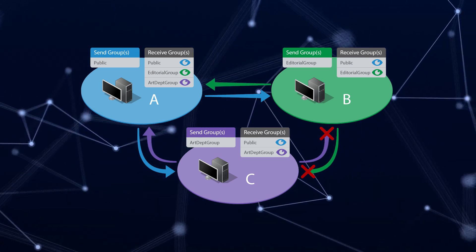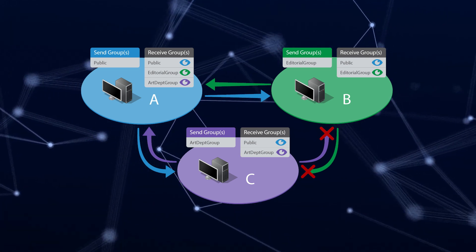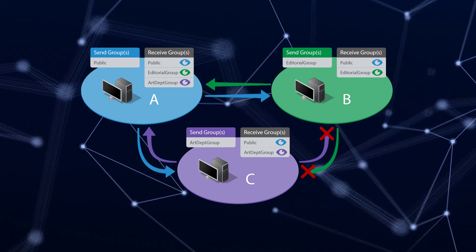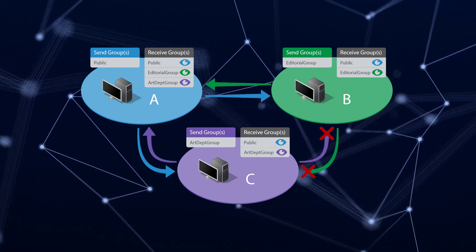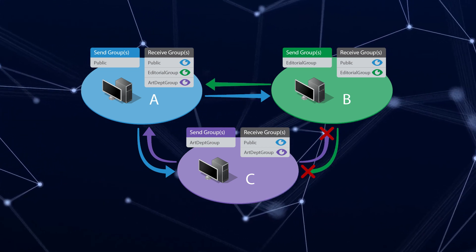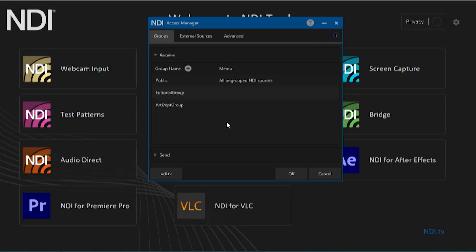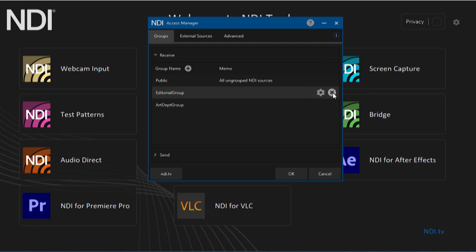This is a basic illustration of the NDI Access Manager features. It is recommended that you check with your IT department before setting this up to make sure everything works properly. If you need to quickly reset everything back, you can delete all groups in Send and Receive, which will place you back into the Public group when you close NDI Access Manager.